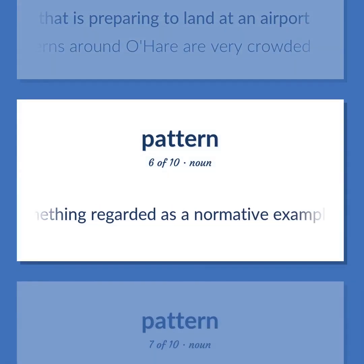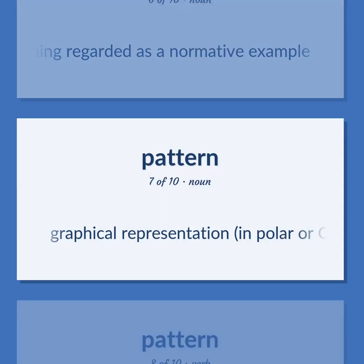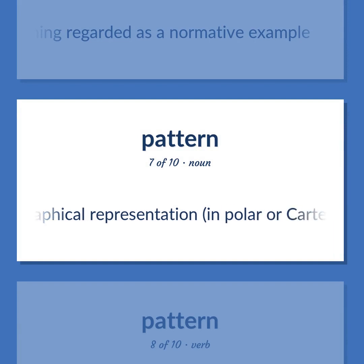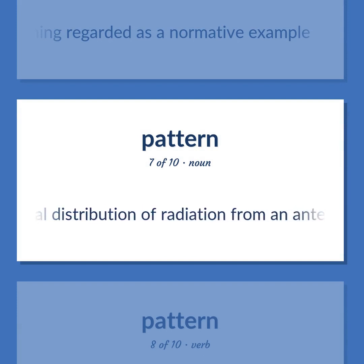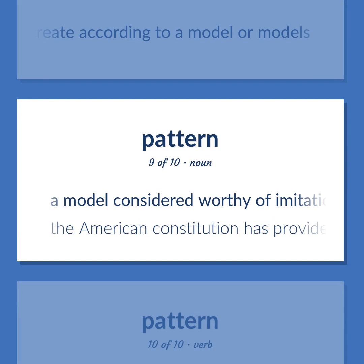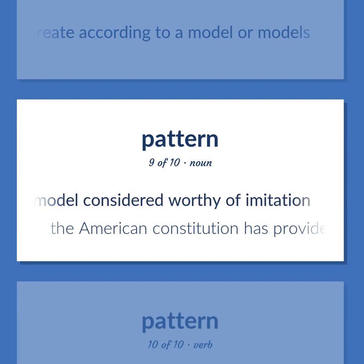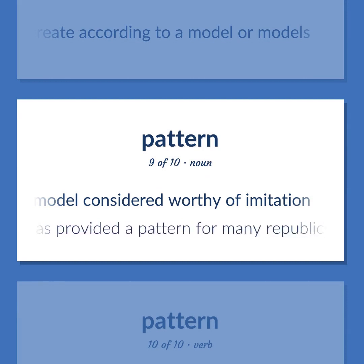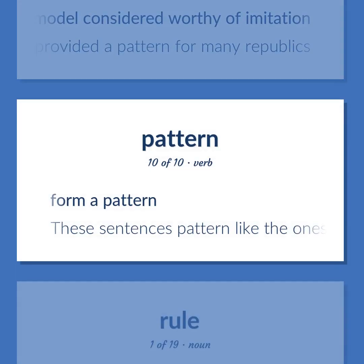Pattern: something regarded as a normative example. Graphical representation in polar or Cartesian coordinates of the spatial distribution of radiation from an antenna as a function of angle. Plan or create according to a model considered worthy of imitation — the American Constitution has provided a pattern for many republics. Form a pattern — these sentences pattern like the ones we studied before.